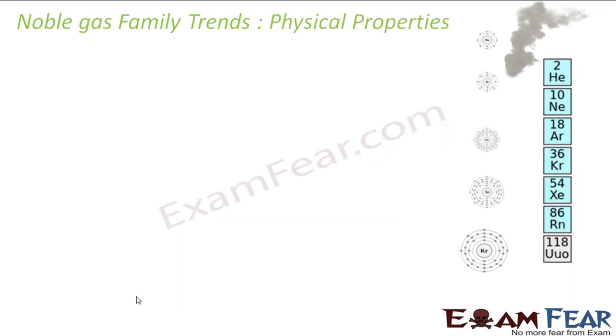Let's talk about the physical property. Physical property, all these are gas first, and they are all monoatomic. For example, you will see helium, you will never see helium too. For example, you have O2, right? You will not see He2. You will never see this. It is always monoatomic.